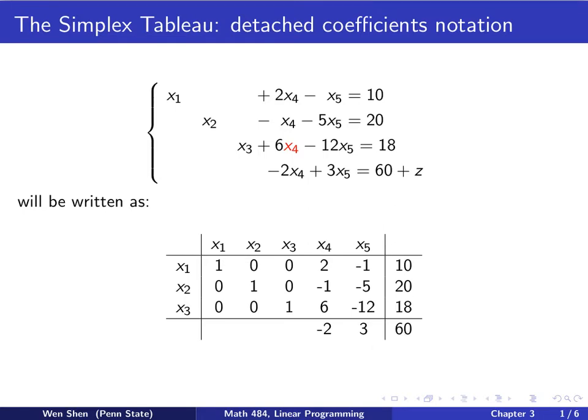We draw a horizontal line to show that these are the constraints, and then what comes is the objective function. We only record the coefficients in the corresponding position and then record the 60 here. So this is the tabular form. Once you've recorded the problem in the tabular form, what you do next is to perform the pivoting process. The whole process can also be recorded in this tabular form.